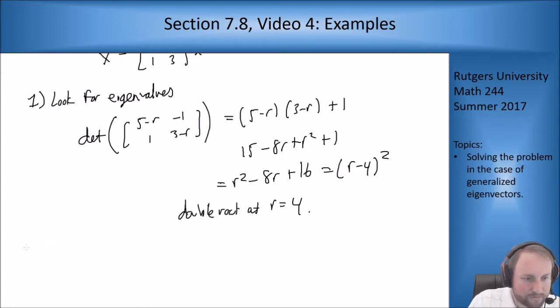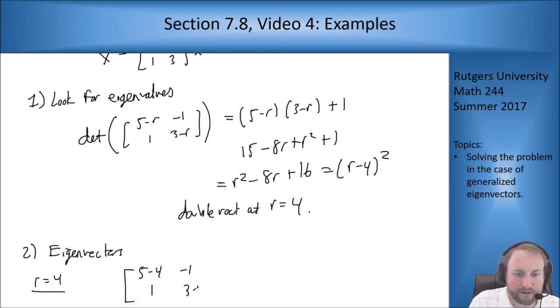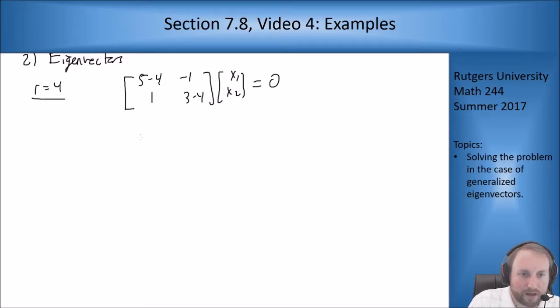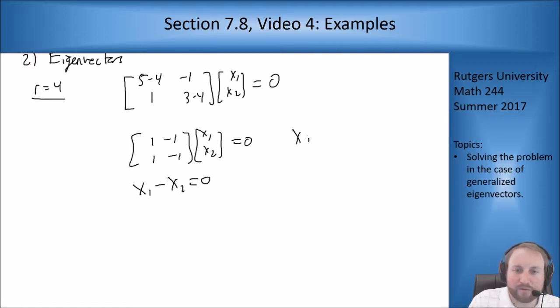For eigenvector, r = 4. If I plug in r to this matrix, I solve [5-4, -1; 1, 3-4][x₁; x₂] = 0. So I get [1, -1; 1, -1][x₁; x₂] = 0. These are obviously the same equation. I get x₁ - x₂ = 0.